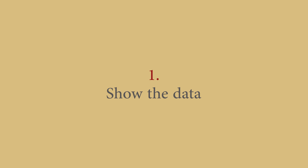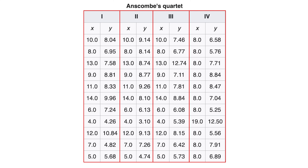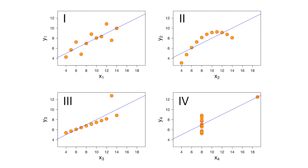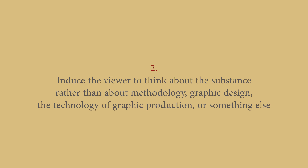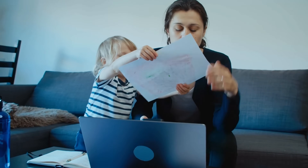Right at the beginning of the book, Edward Tufte sets out eight fundamental principles of data visualization that contribute to what he calls graphical excellence. He refers to something called Anscombe's Quartet, which is a group of four data sets that have nearly identical simple descriptive statistics, yet have very different distributions and appear very different when visualized. One principle is to induce the viewer to think about the substance rather than about methodology, graphic design, or the technology of graphic production.